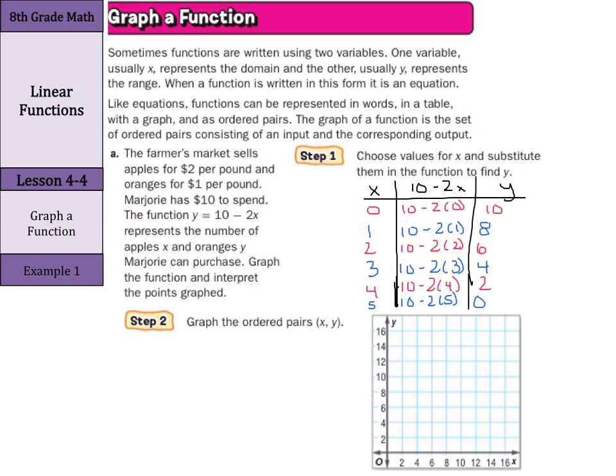Now, we want to graph these x, y. So, we'll have 0, 10. 1, 8. 2, 6. 3, 4. 4, 2. And, 5, 0. So, we go to make our graph here. 0, 10 is there. 1, 8 is here. 2, 6 is here. Then, we have 3, 4. 4, 2. And, lastly, 5, 0. Now, I can draw this as a line here.